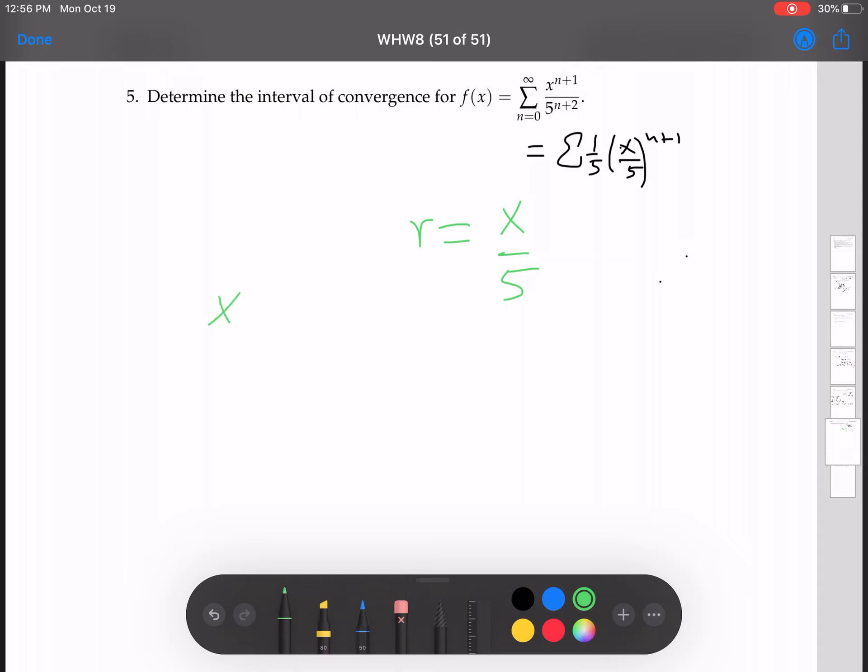So we have x over 5 is between negative 1 and 1, which means x is between negative 5 and 5. Okay, there you go.